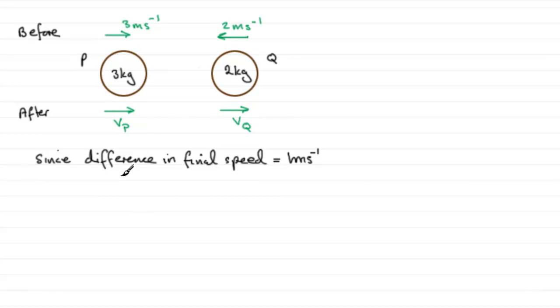Remember VQ has got to be a bigger quantity than VP, because otherwise this one's going to keep banging into the back of Q if this was a greater speed. So VQ minus VP equals 1, and what I'm going to do is put this on hold for a moment.